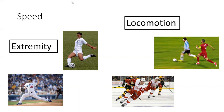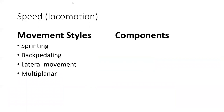Then we also have locomotion speed, which is traveling — think of this as traveling within space. So we have running, skating, swimming, any activity where we are transferring our body through space as rapidly as possible. When it comes specifically to locomotion, we have things like sprinting, backpedaling, lateral movements, and multi-planar movements. For this class, we'll mostly talk about land-based because that's where most of our strength and conditioning training will be.